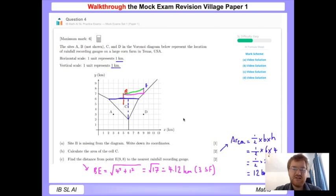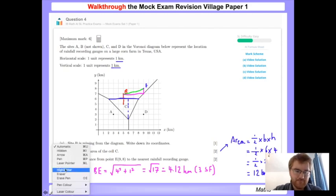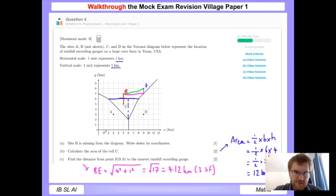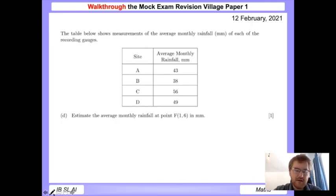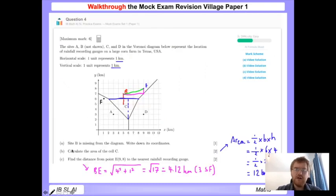We need to estimate the average monthly rainfall at point F (1,6) using the nearest neighbor idea. So 1 across, 6 up is right here. This falls within cell A, so we take A as our answer. A was 43, so our answer will be 43 millimeters.